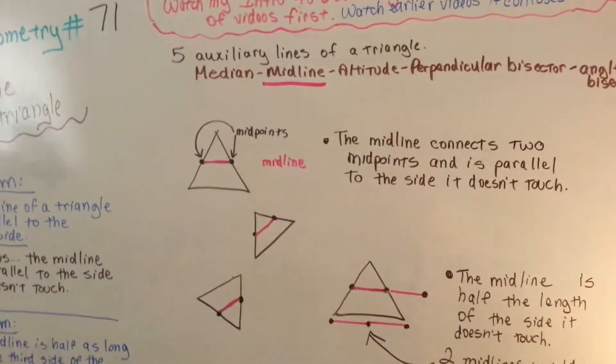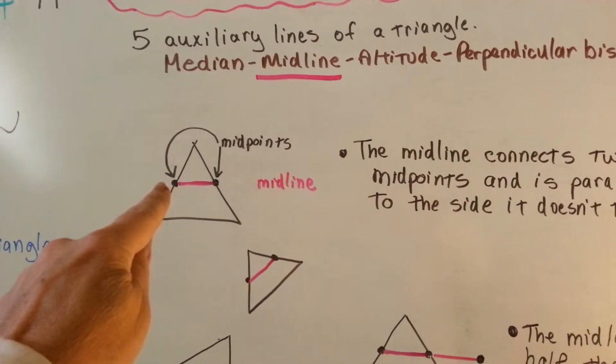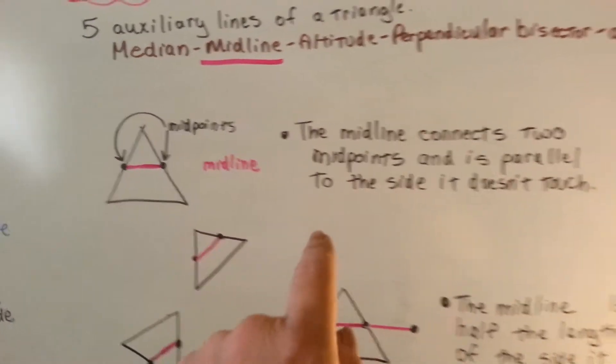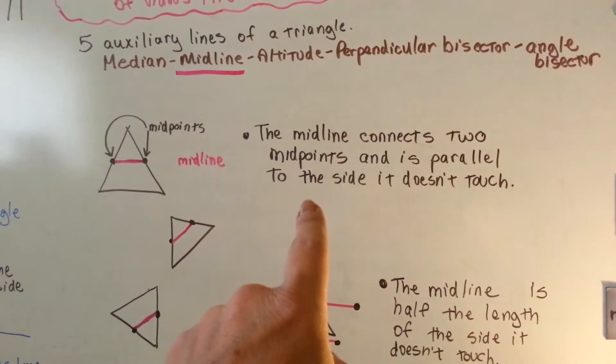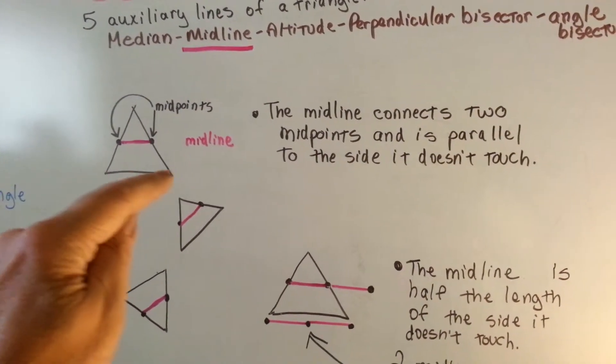So, this is the midline. It is a line that cuts across the triangle from one midpoint to another midpoint. It connects two midpoints and it's parallel to this line here, the line it doesn't touch. See that?